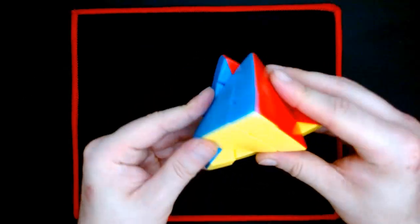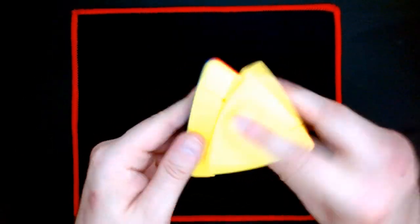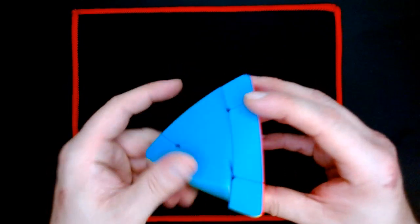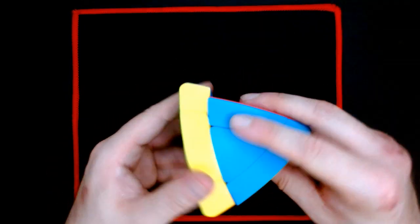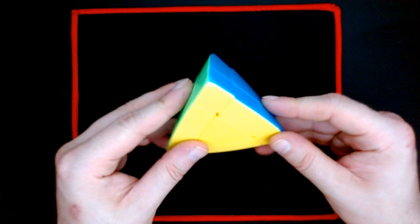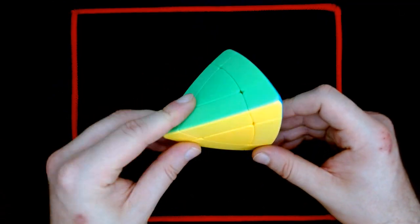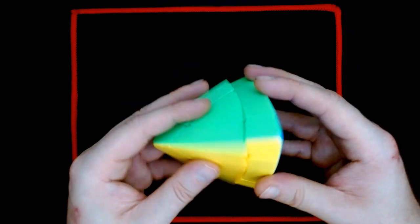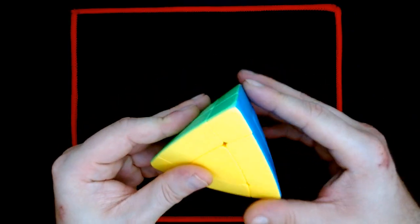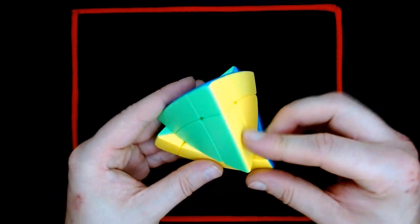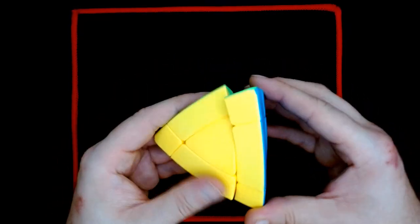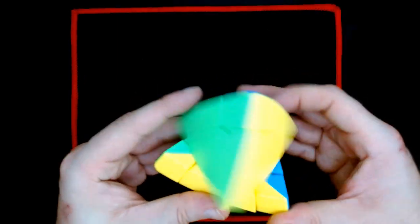So I really enjoy this puzzle. It's a three by three shape mod. Well no, that's not a three by three shape mod, I'm sorry, I am wrong. It's just a tetrahedron. I've gotten plenty of these. I got a keychain version, I got a mirror version, I got a void version.